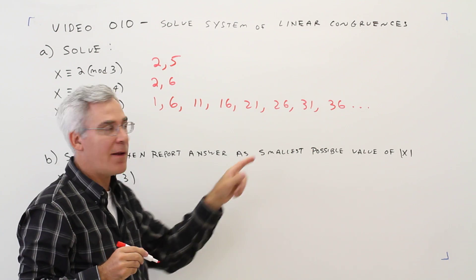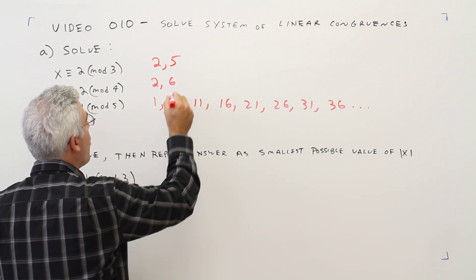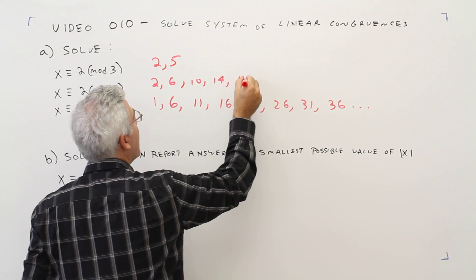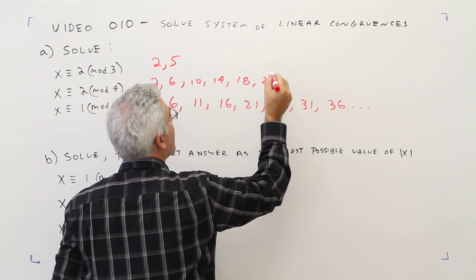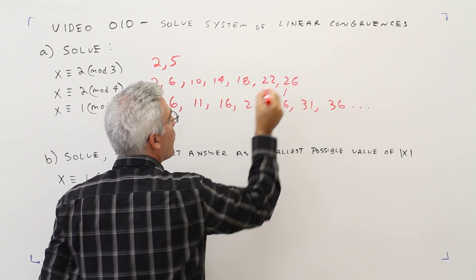I'll continue here until I get a match. So I'm adding 4s: 10, 14, 18, 22, 26.